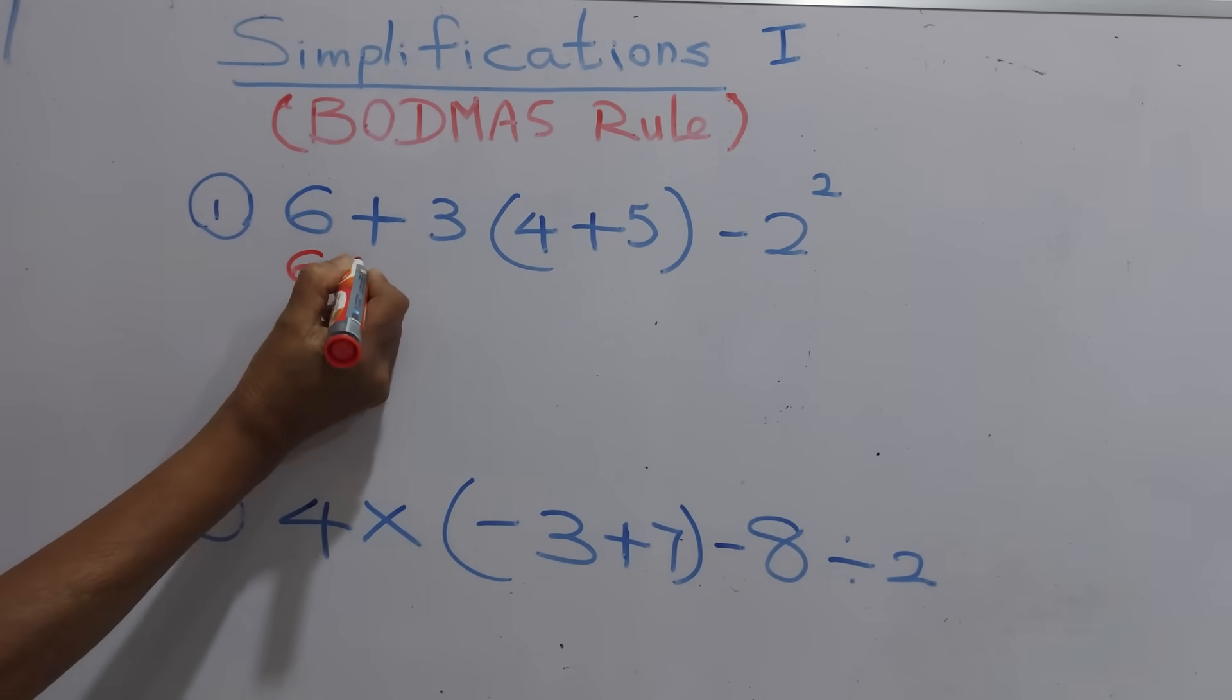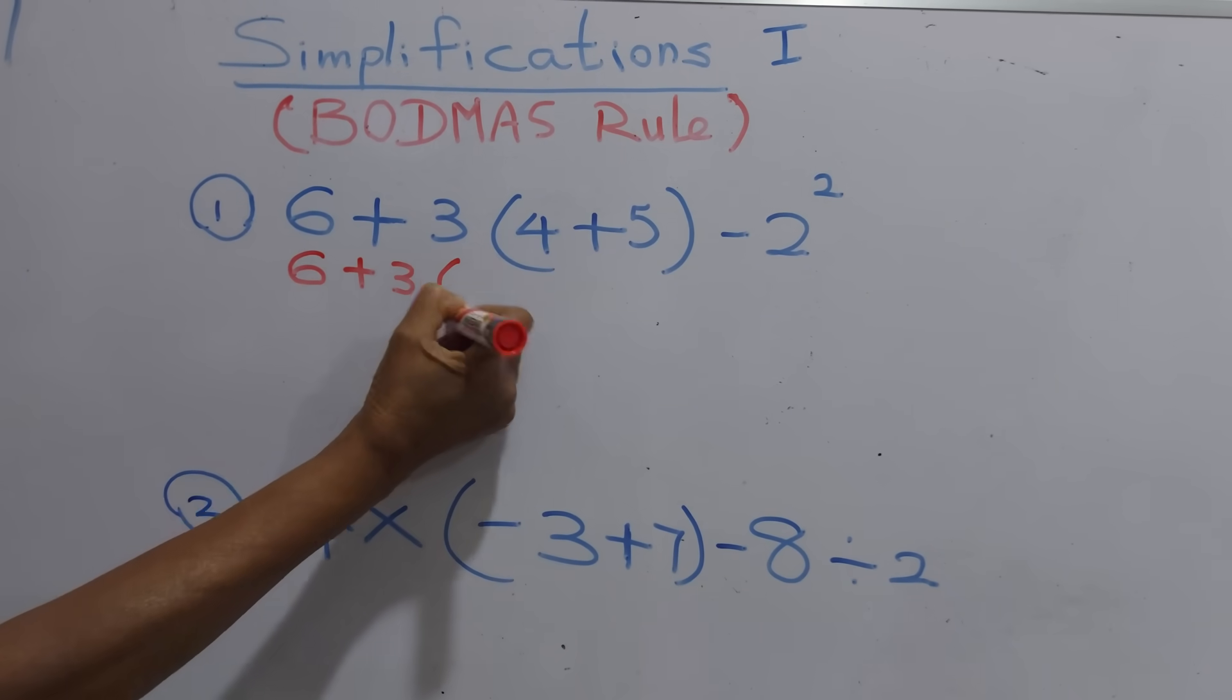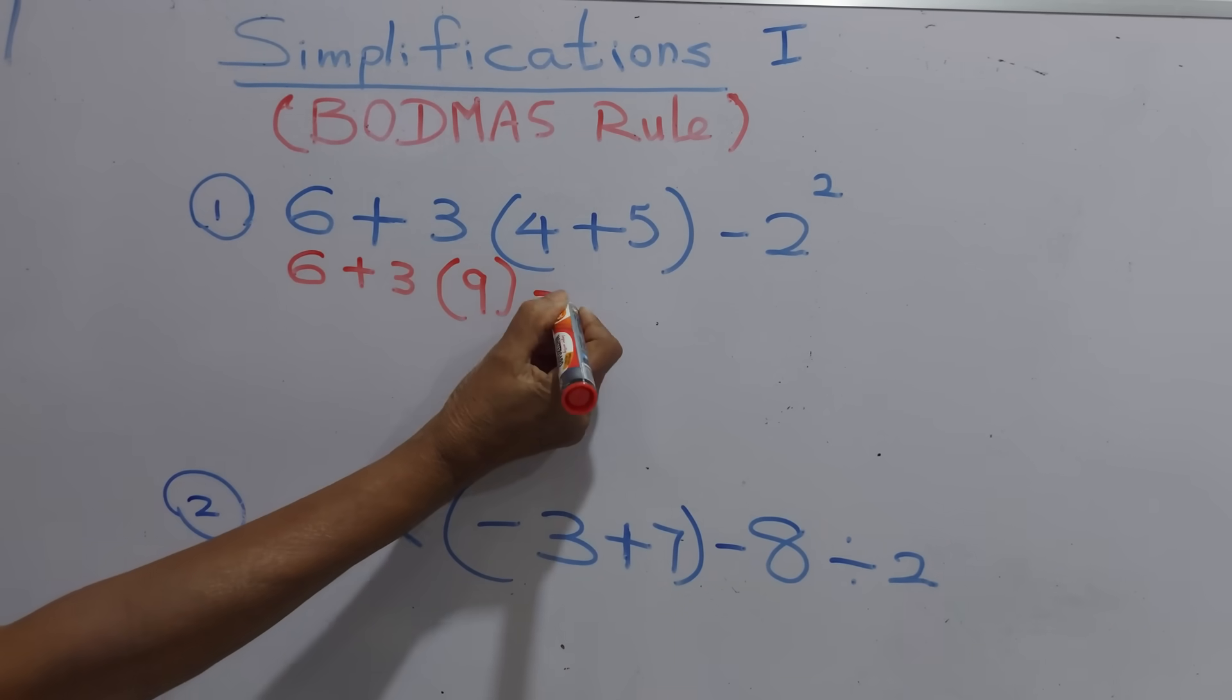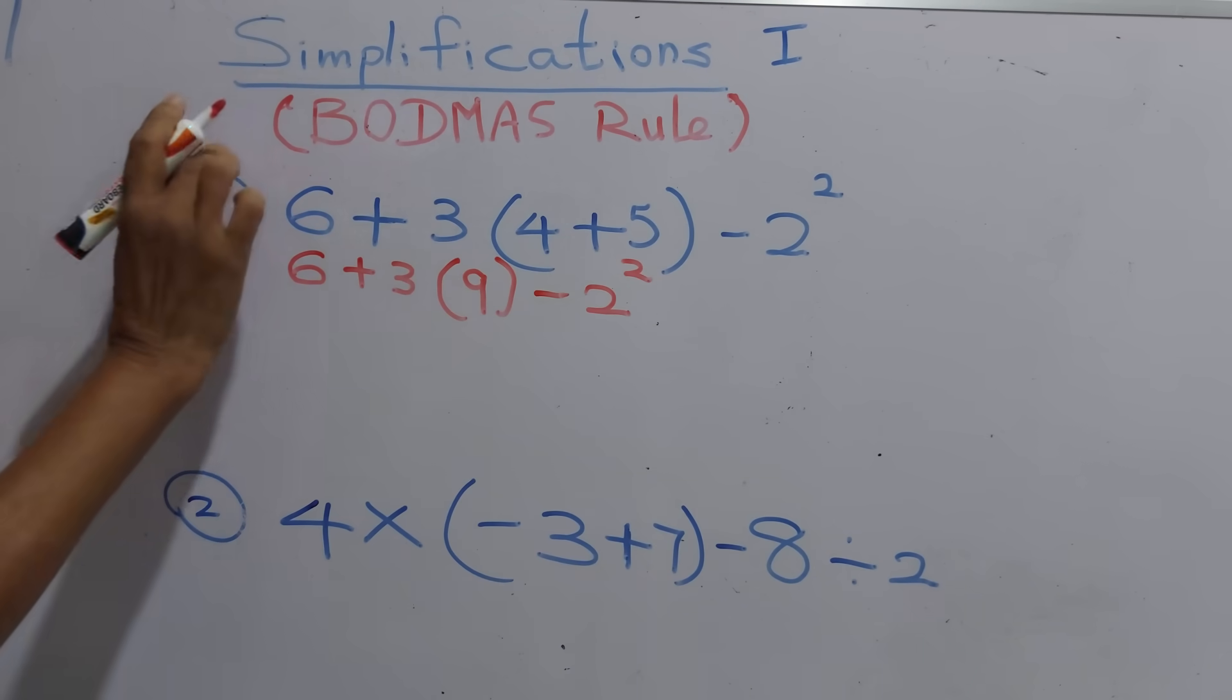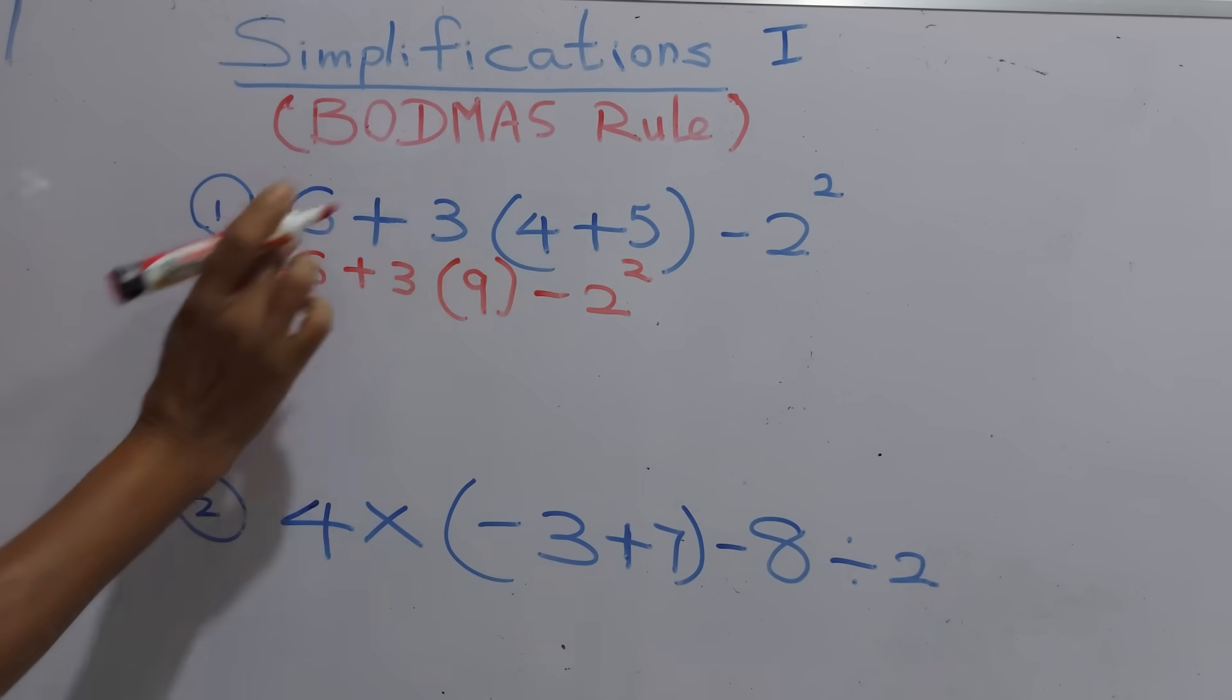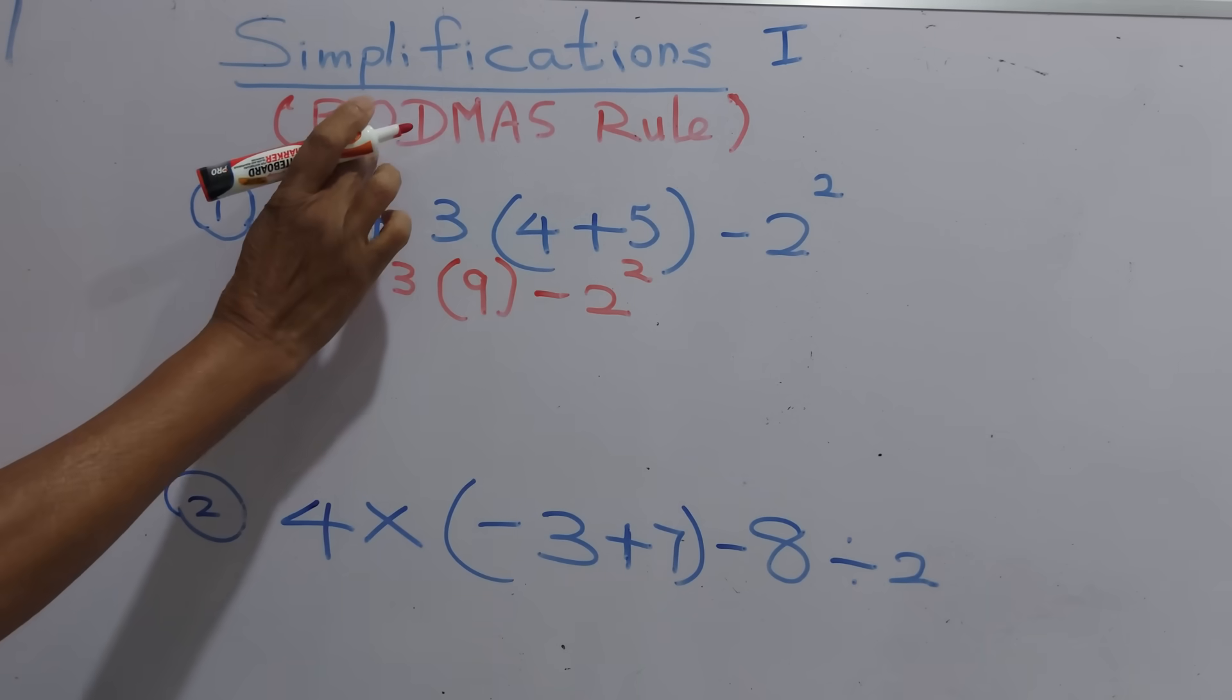We will write the sum: 6 + 3, removing brackets then 4 + 5, that's 9, subtract 2 square. We take the first step as removing brackets. This is the first step. Now the sum is like this.